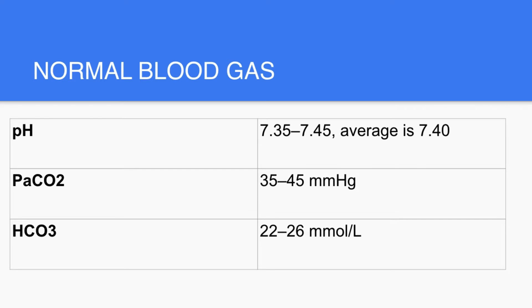The first slide would be about normal blood gases. The normal pH is 7.35 to 7.45. Anything less than 7.35 would be acidosis, and anything more than 7.45 would be alkalosis. The average value is 7.4, which is very helpful in case of compensated acidosis or alkalosis. In compensated acidosis, the pH will not exceed 7.4 — it would be less than 7.4, that is 7.35 up to 7.4.